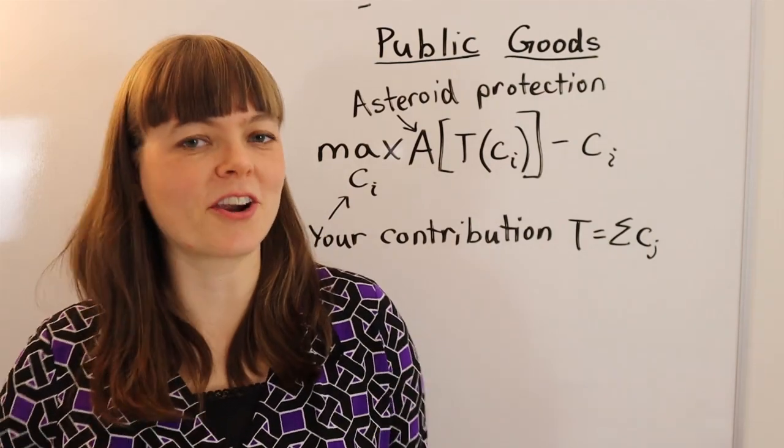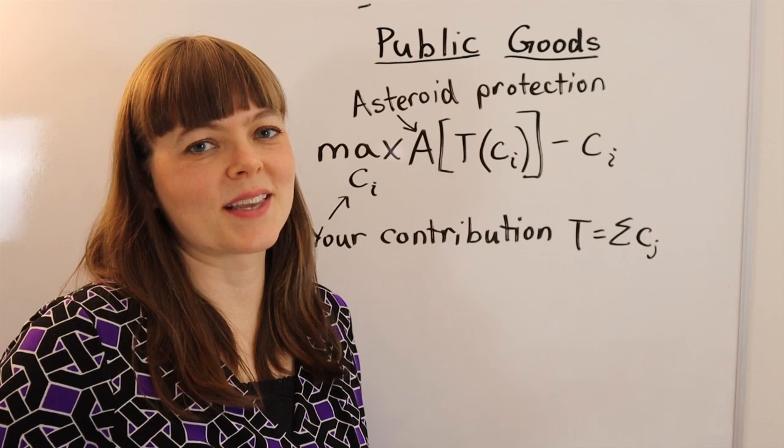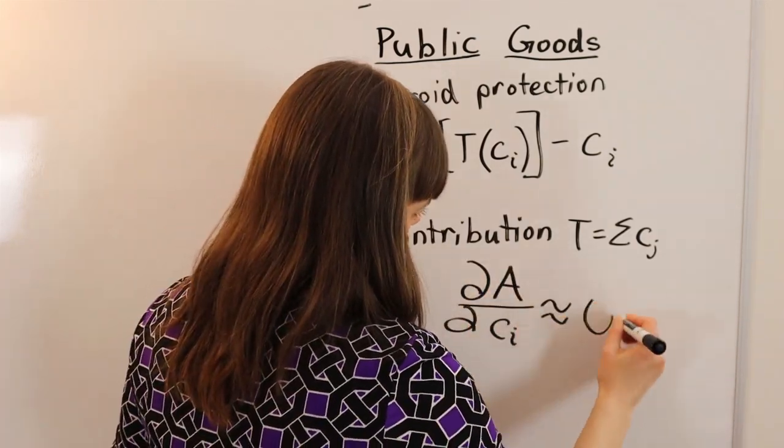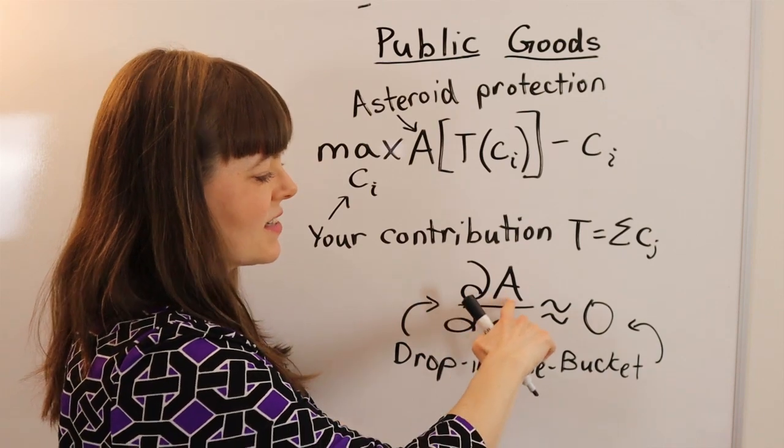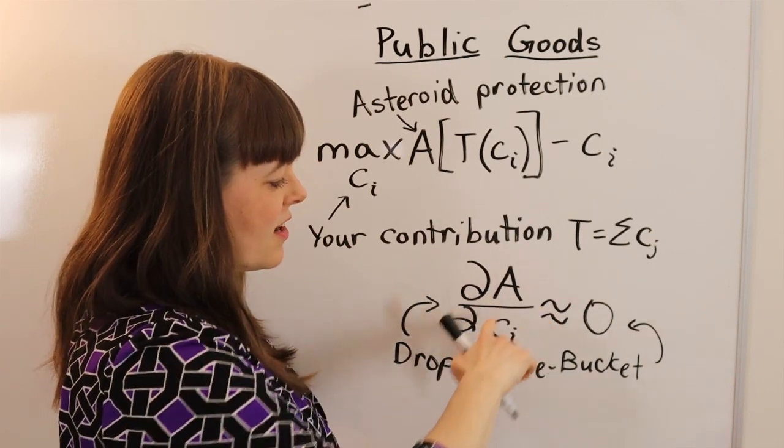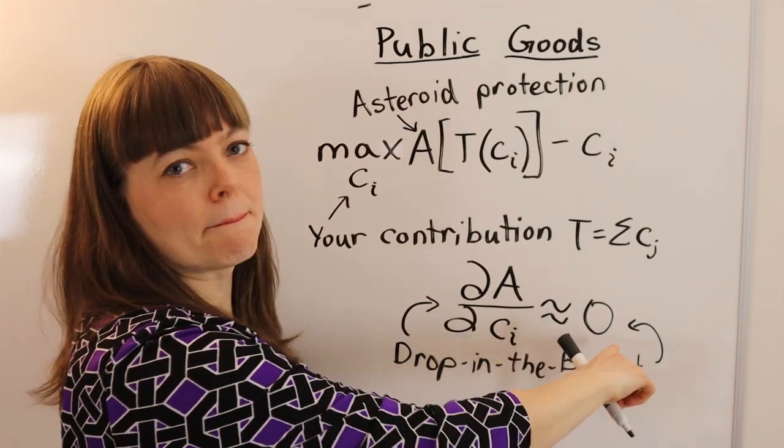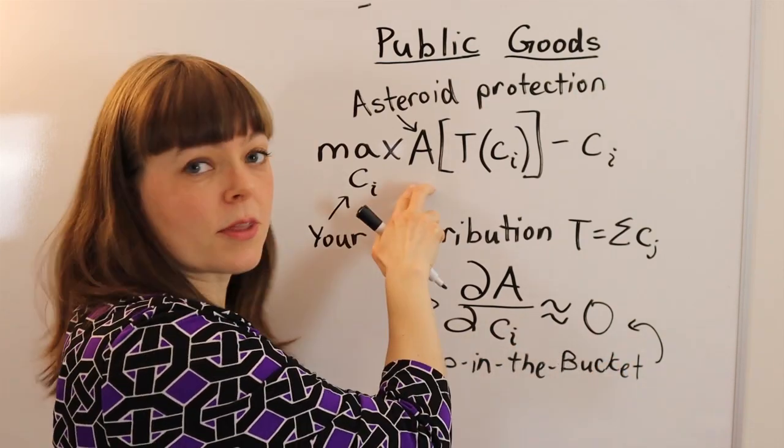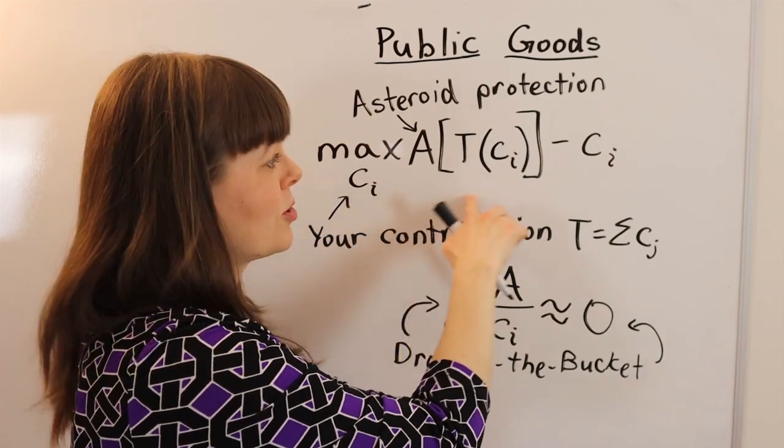And the problem here is the drop in the bucket problem, which I will represent using calculus. The drop in the bucket problem is basically the elasticity of asteroid protection with respect to your personal contribution is about equal to zero. So the marginal benefit of your contribution is super, super low.